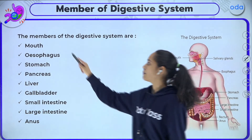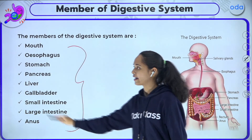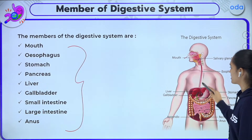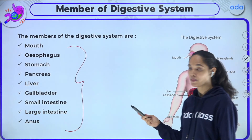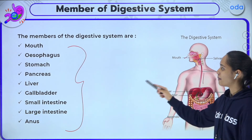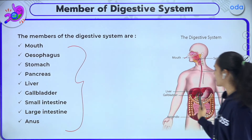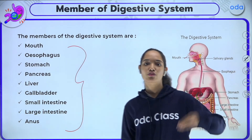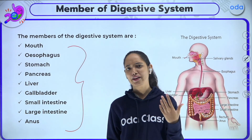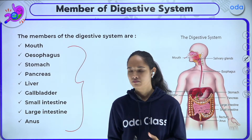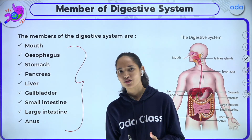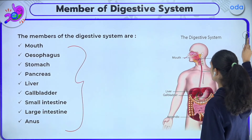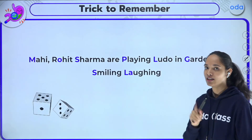The members of the digestive system are: mouth, esophagus (also known as the food pipe), stomach, pancreas, liver, gallbladder, small intestine, large intestine, and anus. It is very important to remember these, but it can be a bit difficult — however, you can easily remember this list with a trick.